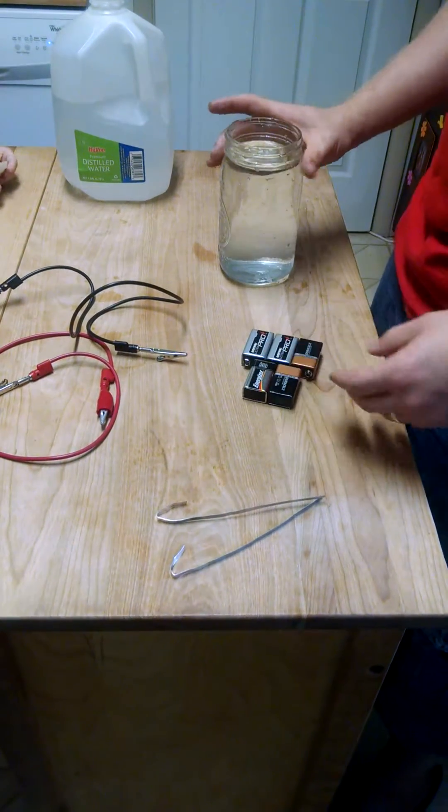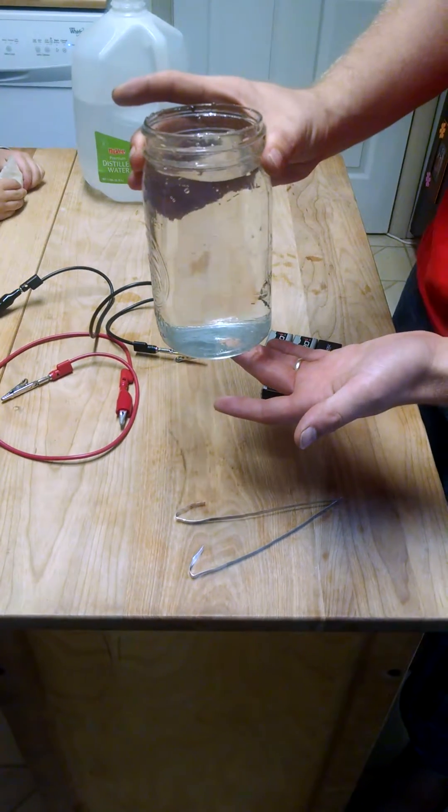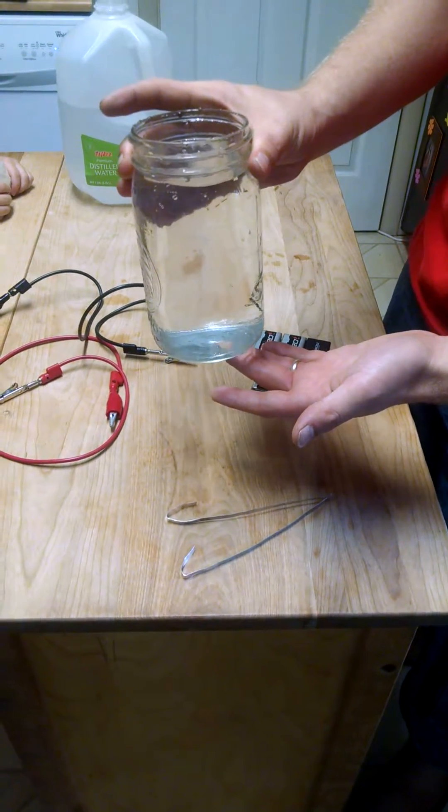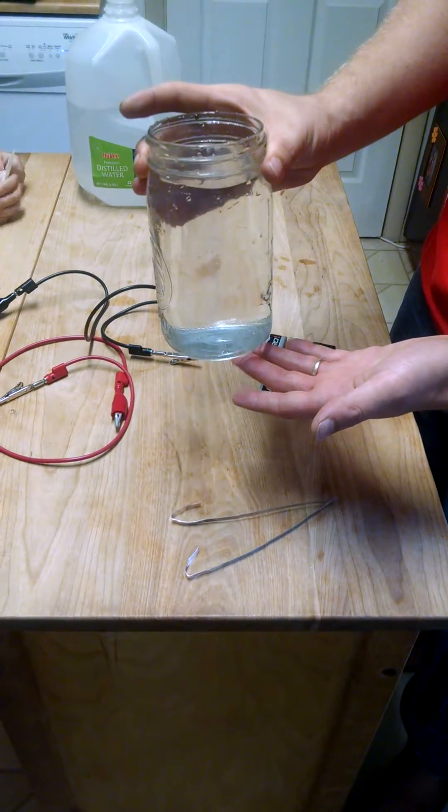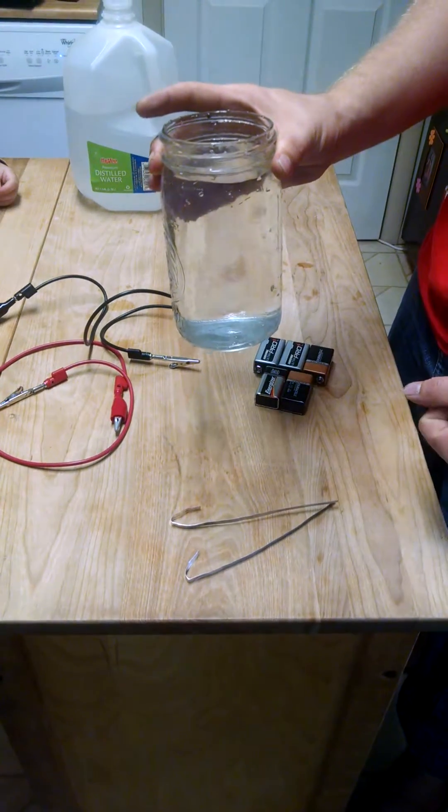So it's an electrolysis reaction. And so you need to fill a mason jar all the way up with your distilled water. You've got to rinse the jar with the distilled water first. Make sure it doesn't have any minerals left in it.